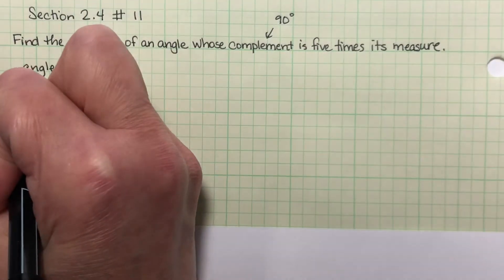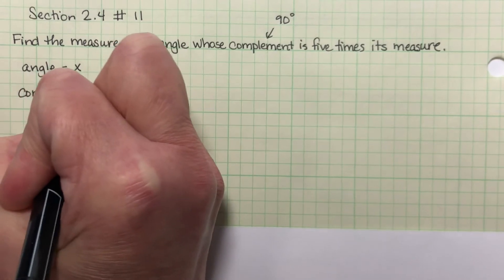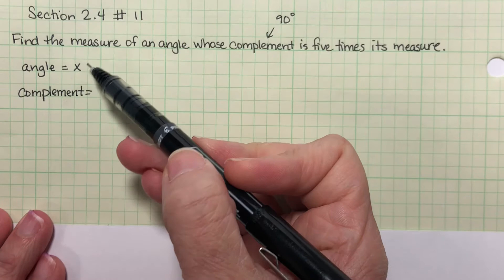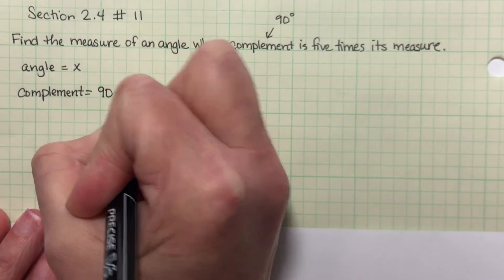Okay, so the complement, and this is always set up the same way: if your angle measure is X, your complement's measure is 90 minus X.